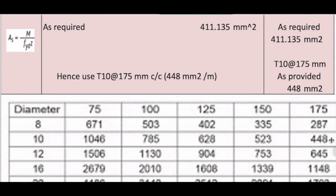So with the spacing of 175 mm, we are going to use 10 mm bar with 175 mm center to center spacing. And the area we will be providing is 448 mm². Thank you.